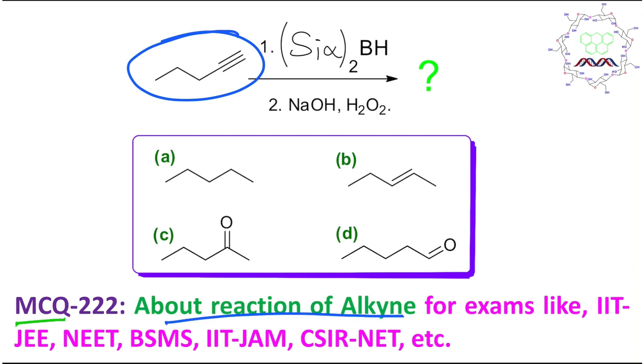This is one-hexyne, a terminal alkyne, and there are two step reactions. One is this boron reagent (Sia)2BH, and the next step is reaction with sodium hydroxide and hydrogen peroxide. You have to say what is the major product of this reaction.